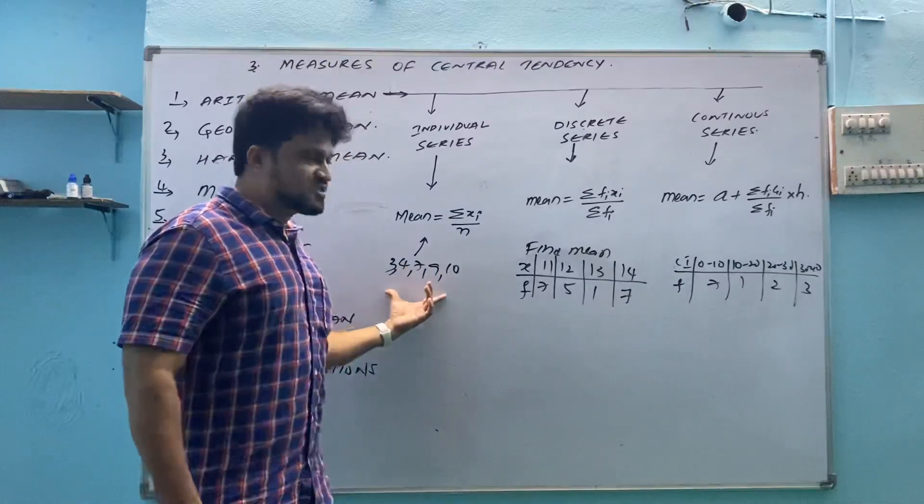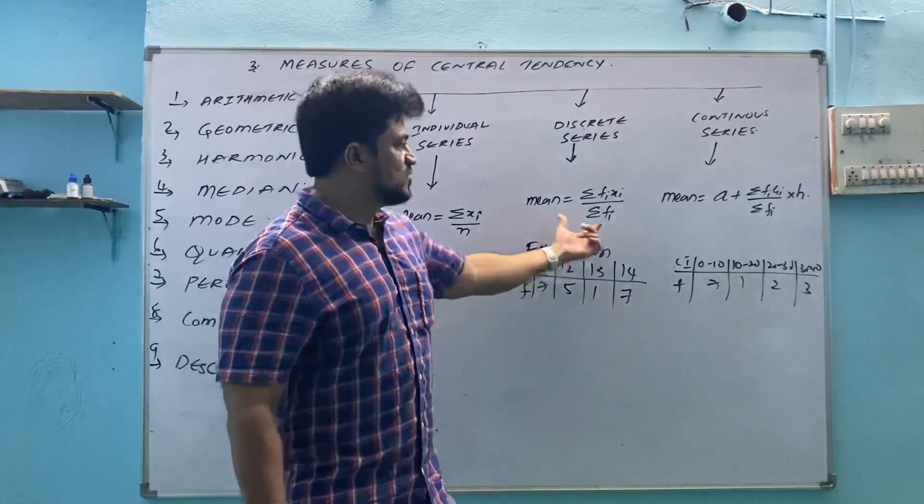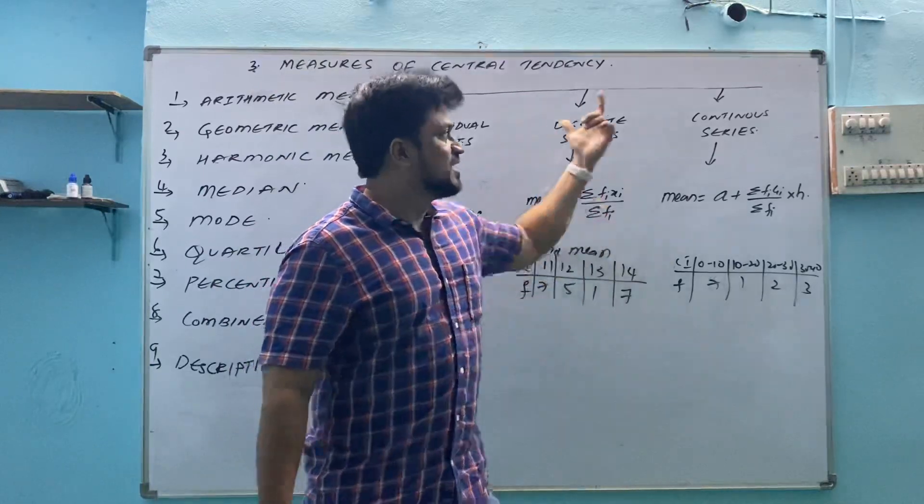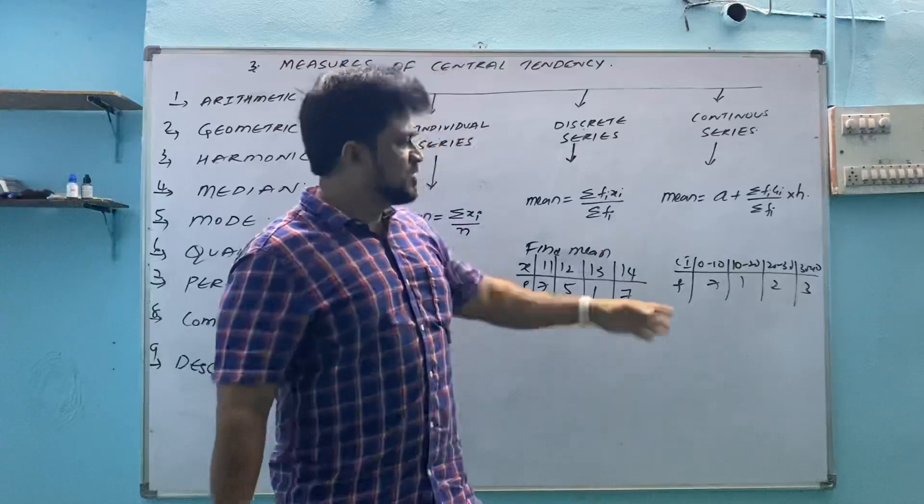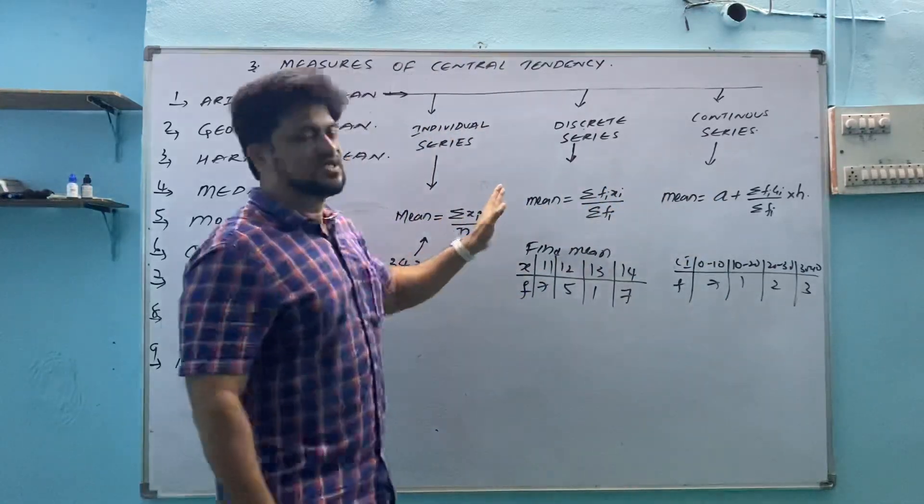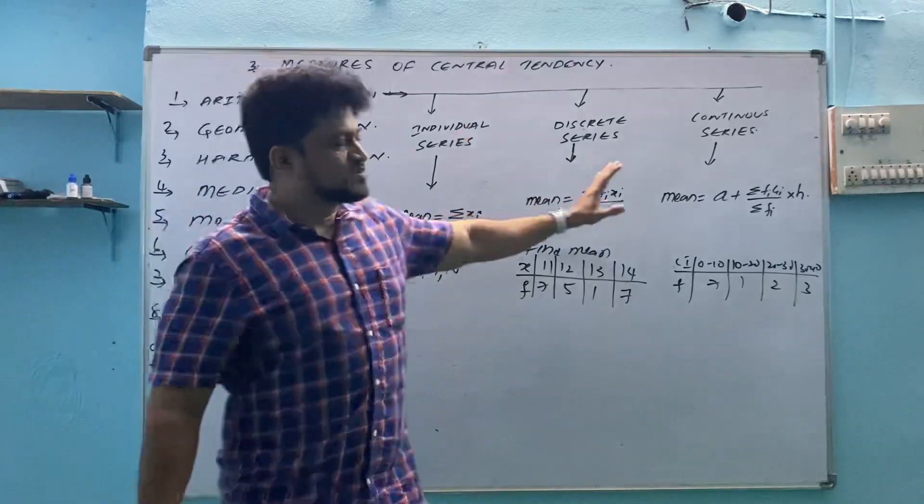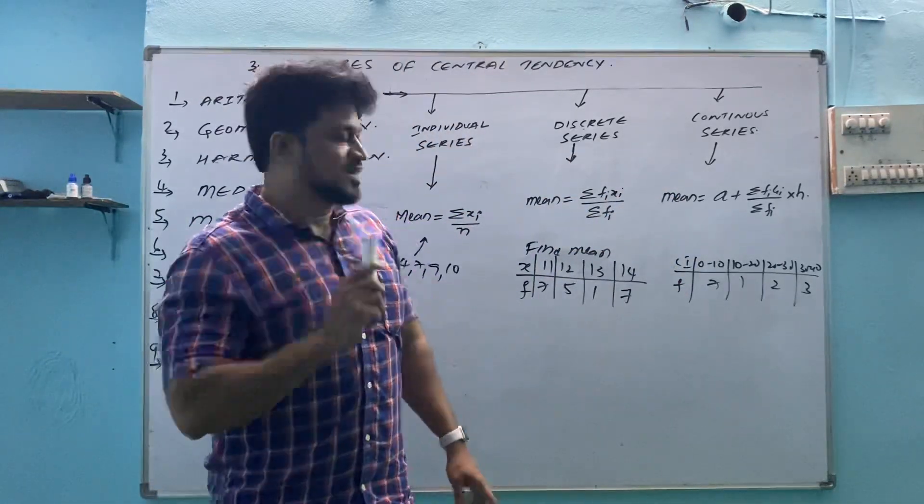If we find individual series questions, that time sigma xi by n. If we find discrete type questions, we will use sigma fi xi by sigma fi. And if we have continuous series questions, we will have this one. Basically you need to hear just go through with continuous series question. These are the things which they can ask for four marks. And this one continuous series question, they can ask for twelve marks.